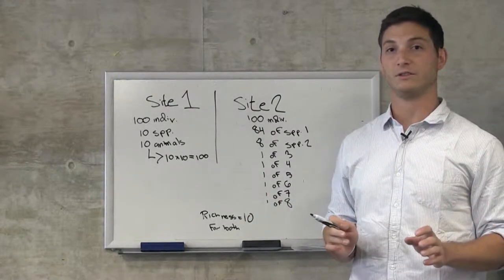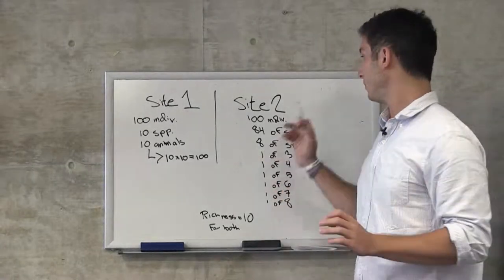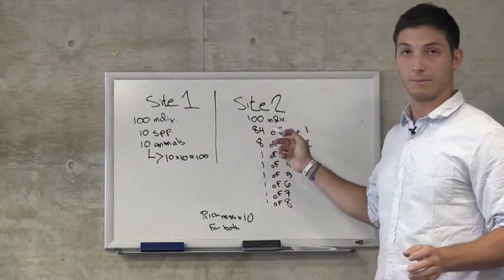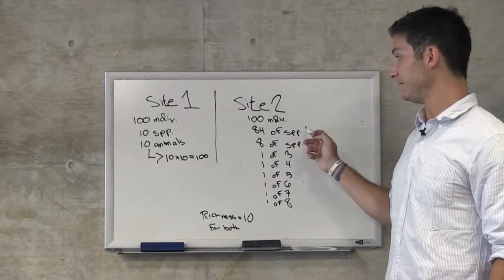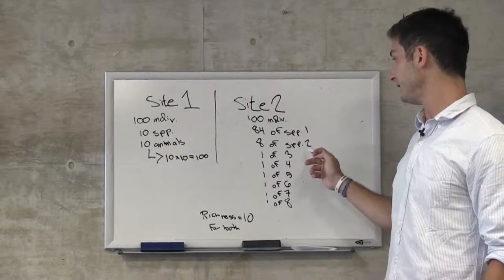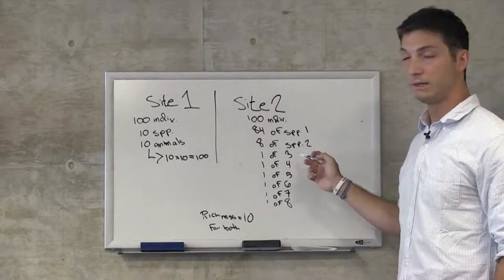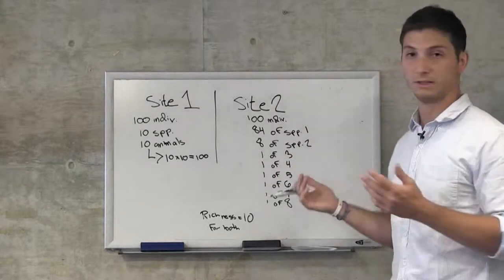If we sample another 100 individuals from a different site, we see that there are, for example, 84 individuals of species 1, 8 of species 2, 1 of 3, 1 of 4, and so on until 8.